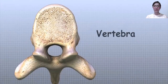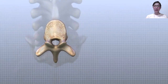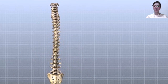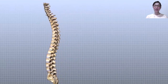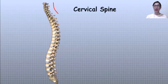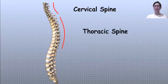The human spine is made of 24 spinal bones called vertebrae. The vertebrae stack on top of one another to create the spinal column. The spinal column gives the body its main upright support. From the side, the spine forms three curves: the neck, called the cervical spine, curves slightly inward; the mid back, or thoracic spine, curves outward.